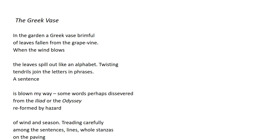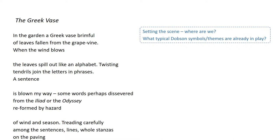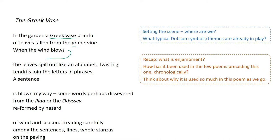Okay, so I'm assuming you have done that — let's get into it. So the Greek Vase, first stanza: 'In the garden a Greek vase brimful of leaves fallen from the grapevine when the wind blows.' We're setting the scene. We're outdoors, classically almost. There is a Greek vase, possibly old. It's brimful of leaves that have fallen from grapevines. When the wind blows — and then we're left hanging because we have this large enjambment here, notably across the stanza.